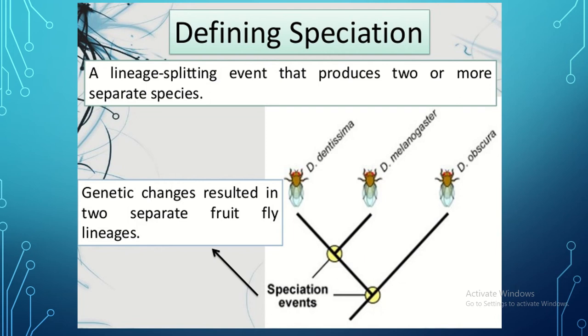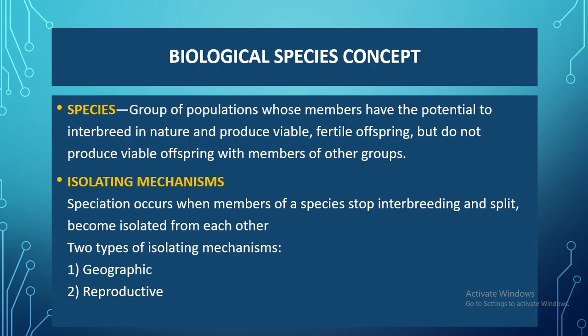The biological definition of a species is: a group of populations whose members have the potential to interbreed in nature and produce viable, fertile offspring, but do not produce viable offspring with members of other organisms. Organisms must interbreed with the same species; interbreeding with another species produces infertile or non-viable offspring. So for fulfilling the basic definition of species, an organism must interbreed with the same species and produce a viable offspring.